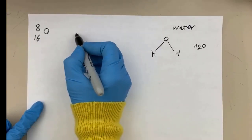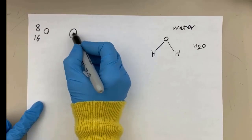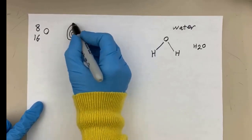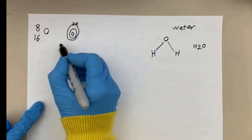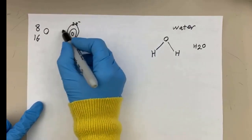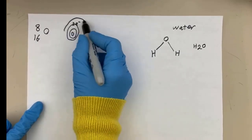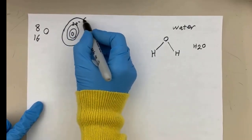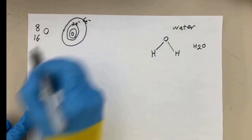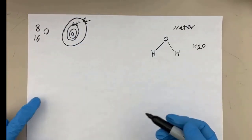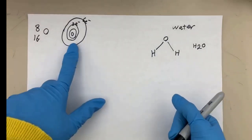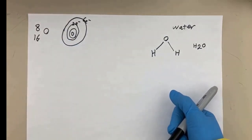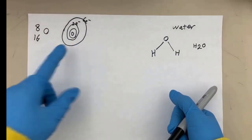That means the number of electrons that oxygen has is eight. If I put two in the first shell, eight minus two gives us six electrons, meaning the valence electrons of oxygen are six.